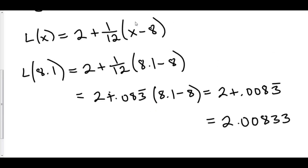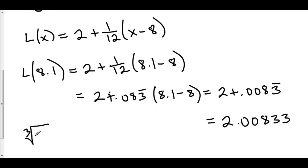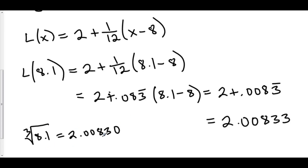As it turns out, the cube root of 8.1 is approximately 2.00830. So this is really close to our actual function value at 8.1. This is so cool — it's really close and we can do all of this in our head. That's the coolest part of all of this.